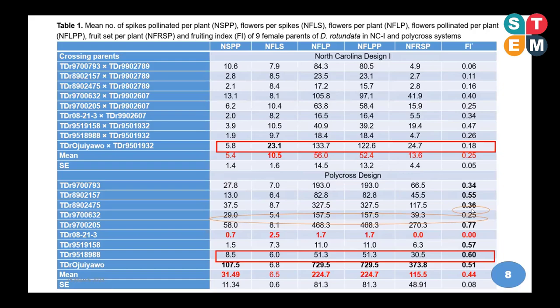For the North Carolina Design 1 system, yam flowers are tiny and crossing using the controlled method — like the nested design — can cause damage on the stigmatic surface of the flower, which could affect development. In the final analysis, looking at the fruiting index and comparing both systems, the fruiting rate under the polycross system was higher.